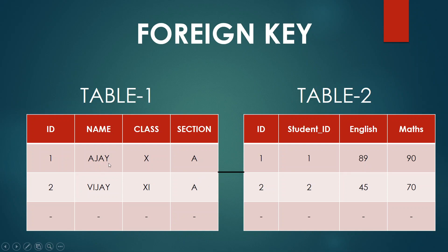This is how the tables are connected. For student AJ with ID 1, his English marks are 89 and maths marks are 90. For Vijay with ID 2, his marks are 45 and 70. So the two tables are connected through the foreign key, completing the relational model.